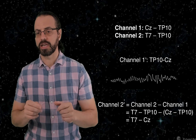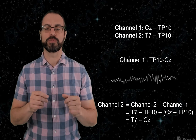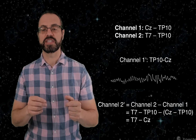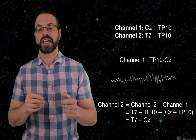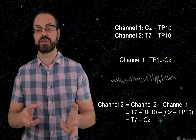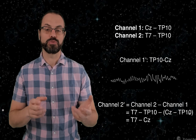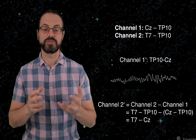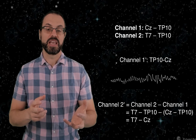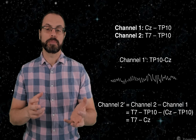We can simply subtract the signal from the first channel to the second channel. As you see here, TP10 cancels out and we now have the potential of T7 with reference to CZ.